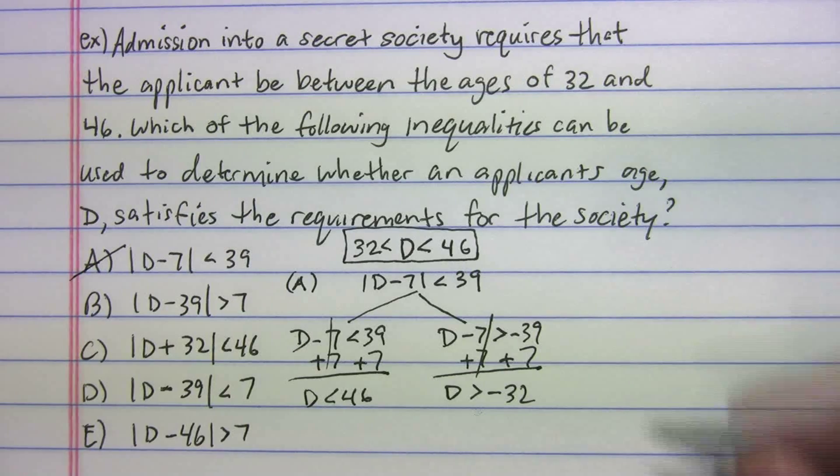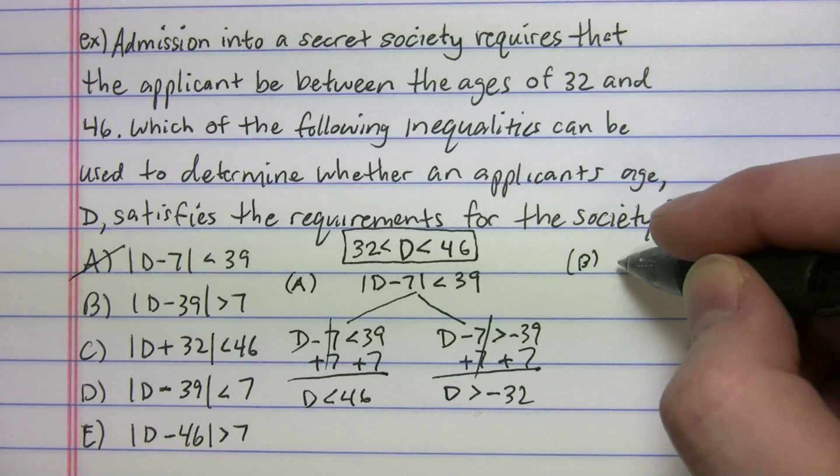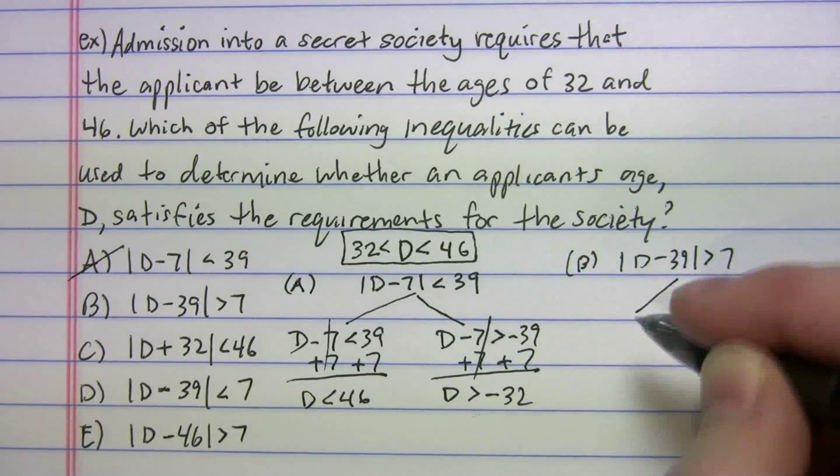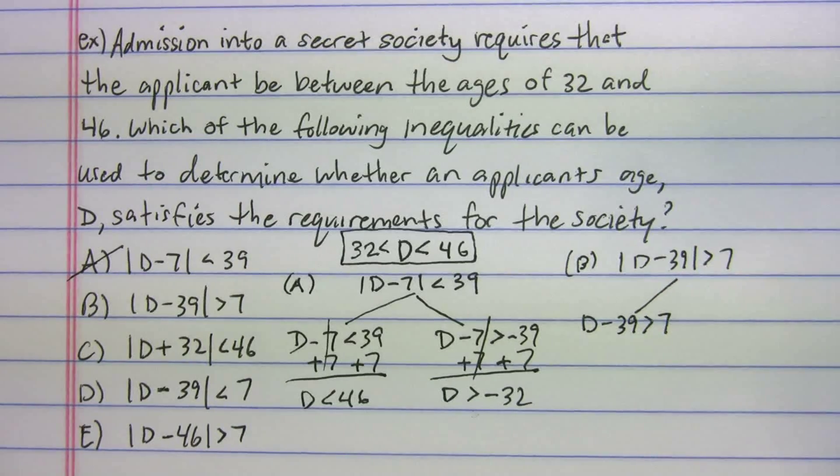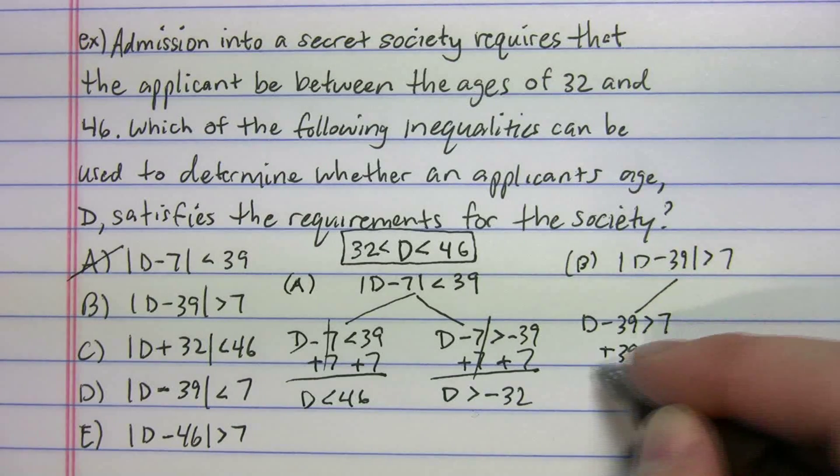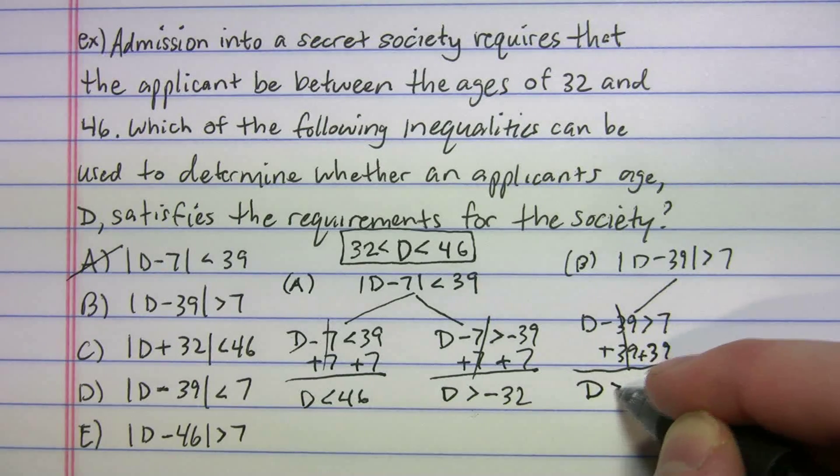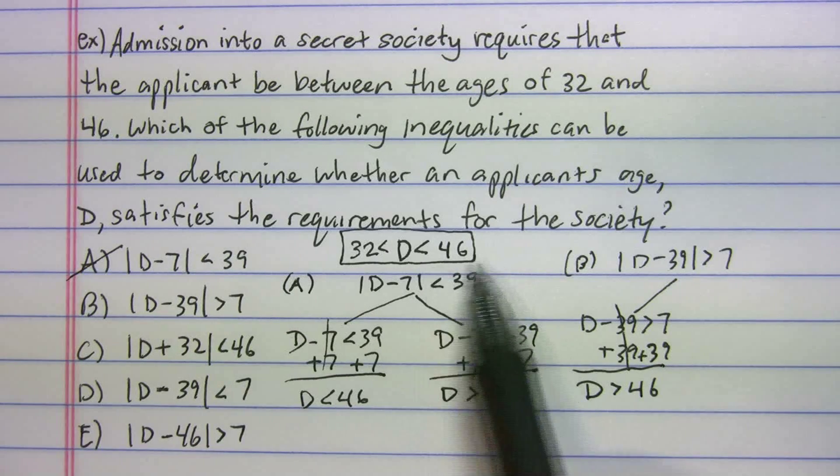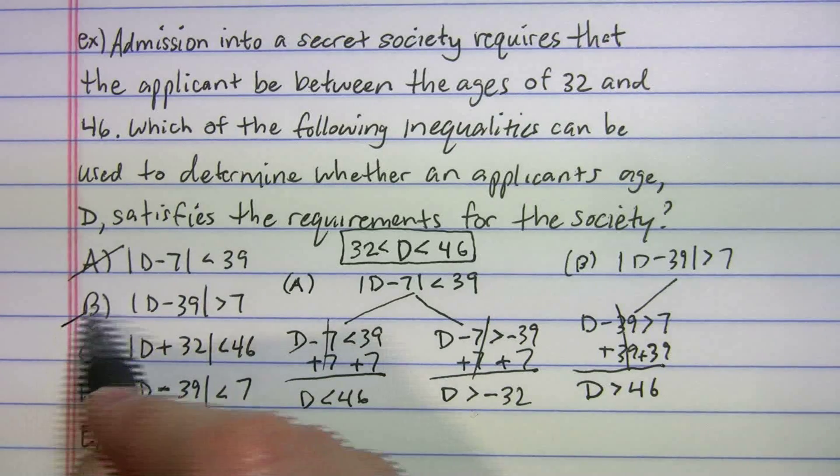Let's try B. So B is D minus 39 greater than 7. We'll do the positive distance. D minus 39 is greater than 7. When we add the 39, look what happens. We get D is greater than 46. Is that what we wanted though? No. We want D to be less than 46. The person going into the secret society has to be less than 46.